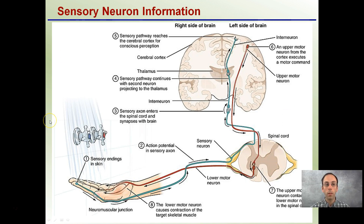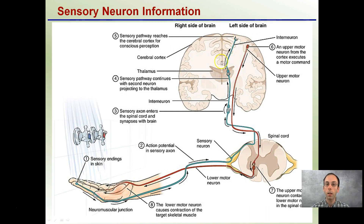As an overview of sensory neuron information, for example, if water is coming down and we put our hand out, we want to sense what the temperature of that water is. The sensory endings in the skin will lead to an action potential in the axons, transferring sensory information up to the brain. The sensory axon enters the spinal cord where it synapses, and the sensory pathway continues with secondary neurons projecting to the thalamus. The sensory pathway then reaches the cerebral cortex for conscious perception — now we're into the thought process of whether the water is hot or cold.